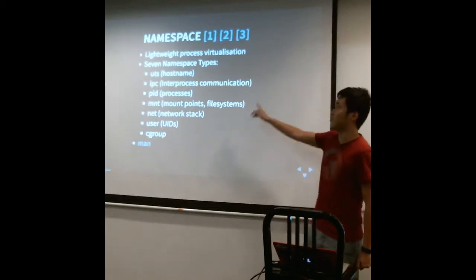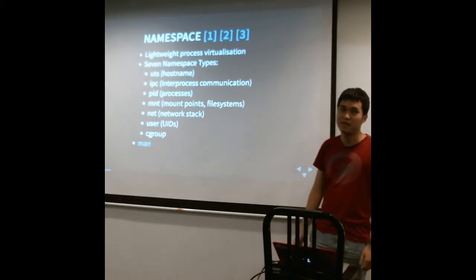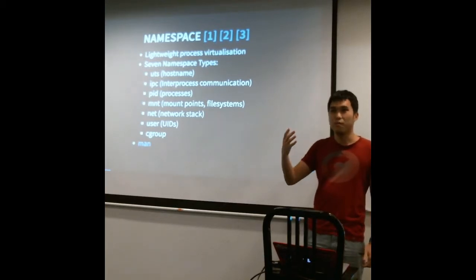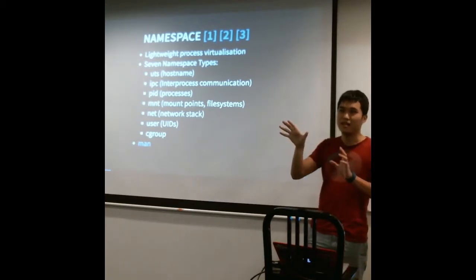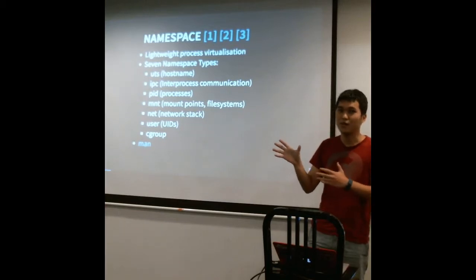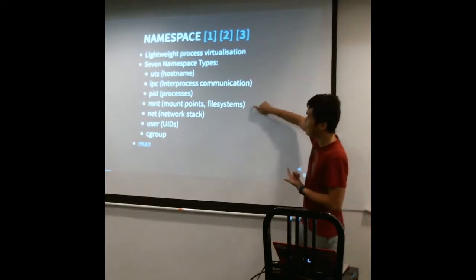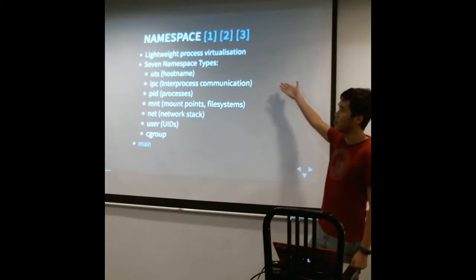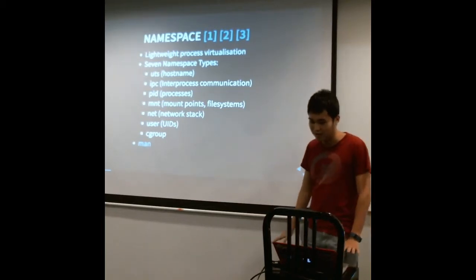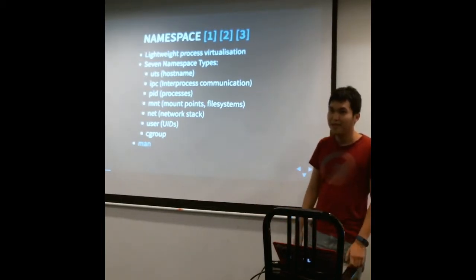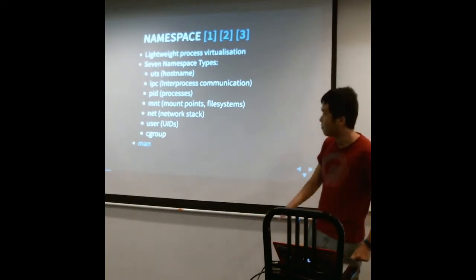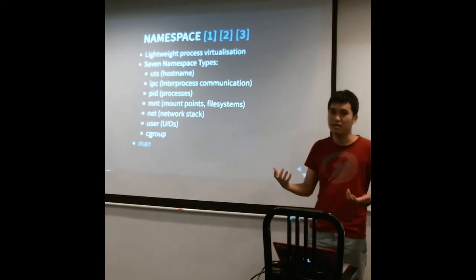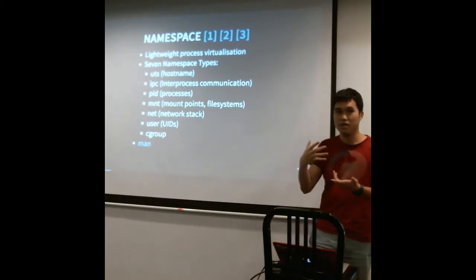So first I'll talk about namespaces. There's a bunch of links you can read on namespaces. It's a kernel feature where it allows you to place your processes in another namespace where you'll get a copy of all these things that the kernel provides. I won't go too much into the details about that because it's quite dry, but I'll demonstrate primarily the PID namespace and the mount namespace. PID is processes and mount is like mount points and file systems.